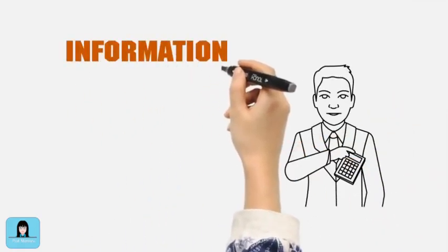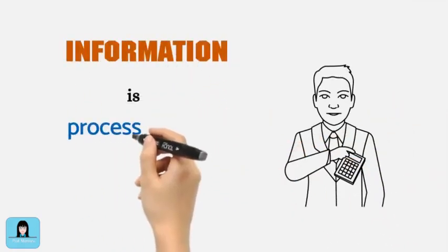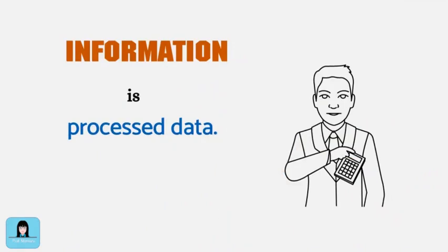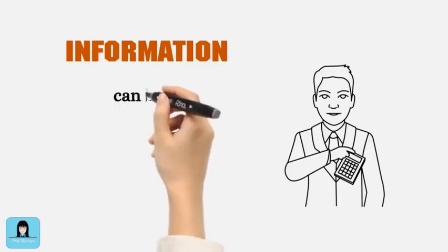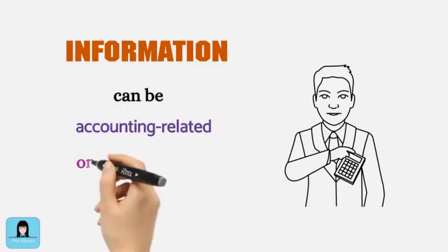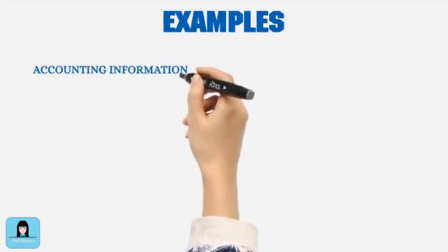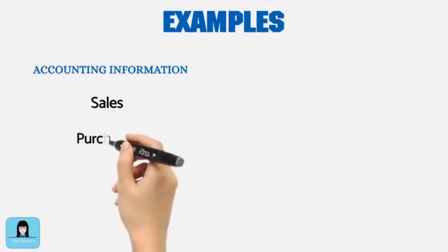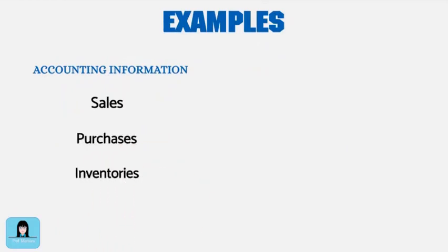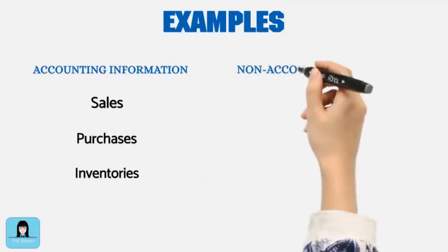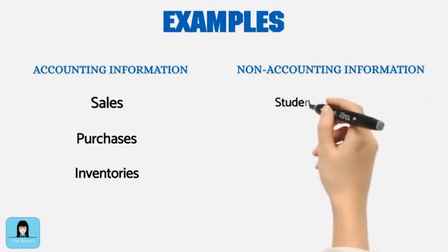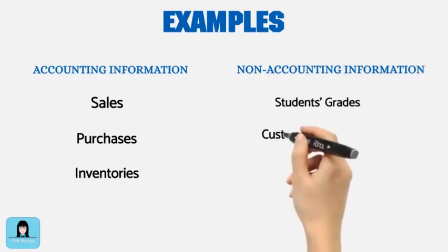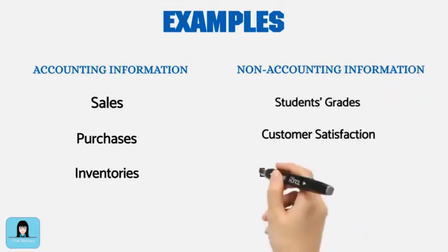Information is processed data. Data become information only when used in decision making. Information can be accounting-related or non-accounting. Examples of accounting-related information are Sales, Purchases, and Inventories. Examples of non-accounting information are Students' Grades, Customer Satisfaction, and Employee Performance Evaluation.